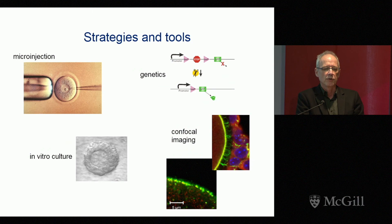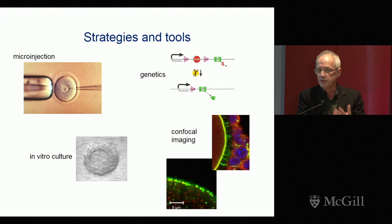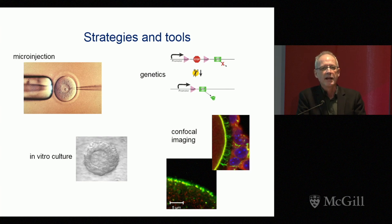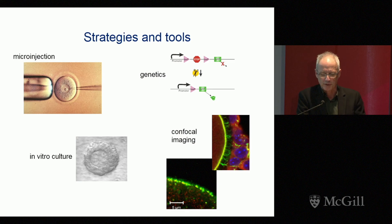So how do we do our work? We do a lot of microinjection, for example of messenger RNAs into oocytes, and in order to obtain those messenger RNAs we utilize techniques of genetics. After the microinjection, we culture the oocytes either alone or in the follicles as you see here. And then at the end of the experiment, we get to use sophisticated instruments like confocal microscopes to generate these really cool images.